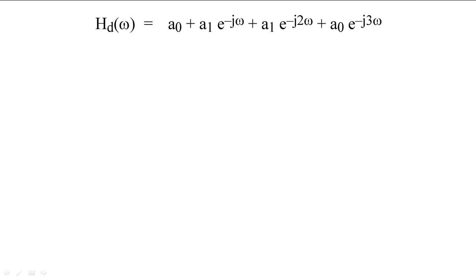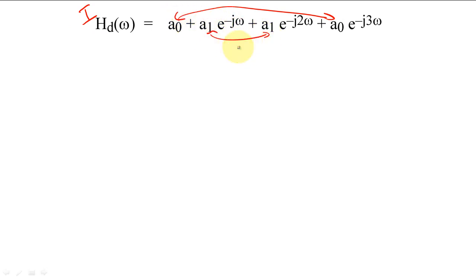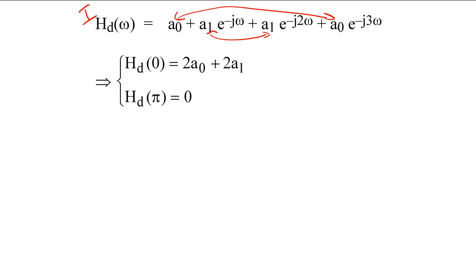Now that we know the requirements for these generalized linear phase filters, we can discuss what classes of filters each of these filters can implement. Suppose that we have a filter with generalized linear phase type 1. If we evaluate the filter equation at zero, the frequency response will be non-zero. If we evaluate the filter equation at pi, the frequency response will be zero.